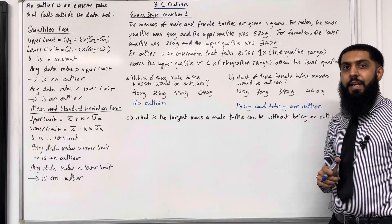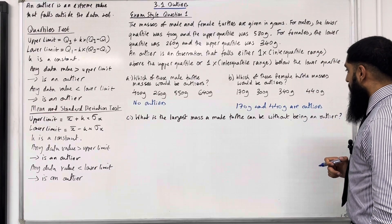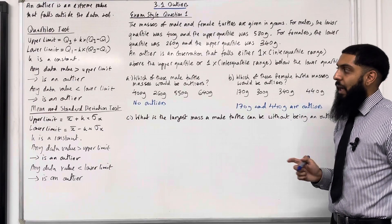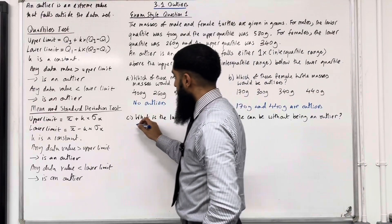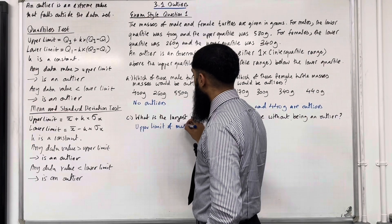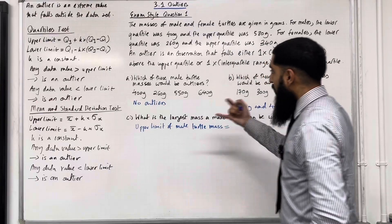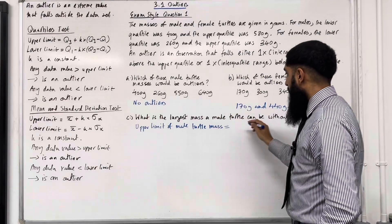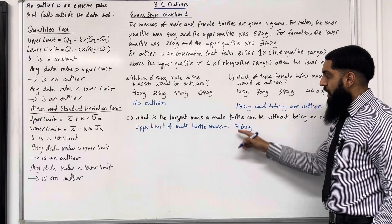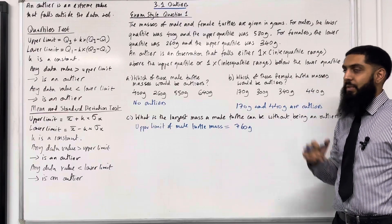Moving on to part C of exam style question 1: what is the largest mass a male turtle can be without being an outlier? That largest mass is basically the upper limit of the male turtle mass calculated in part A. The upper limit was calculated as 760 grams, so a male turtle can be 760 grams at maximum without being an outlier. This completes exam style question 1.